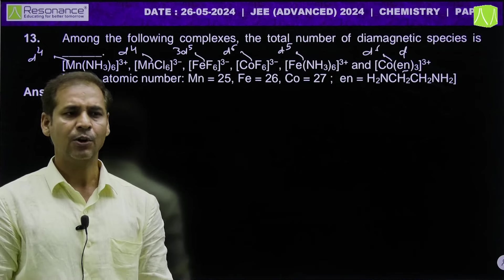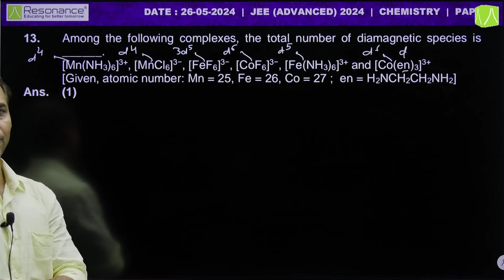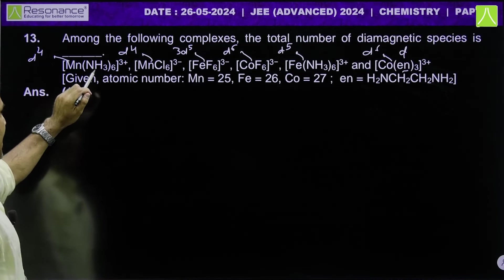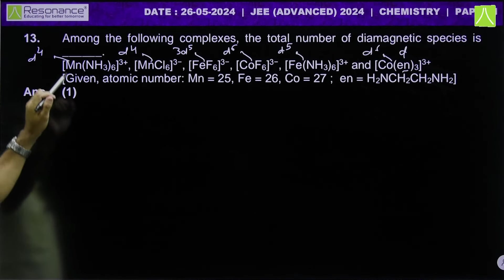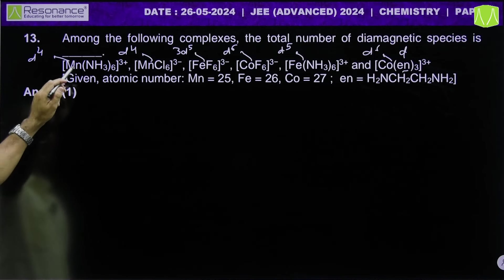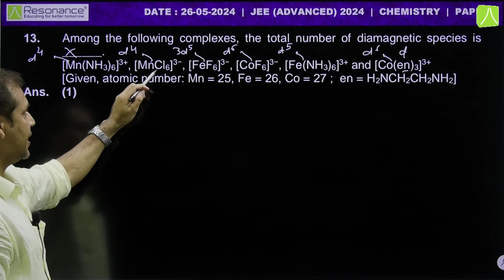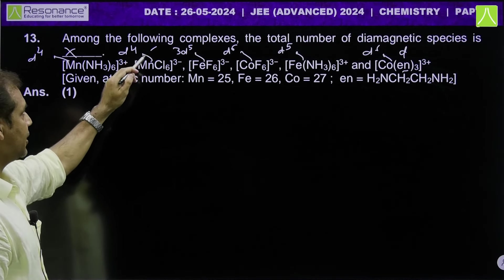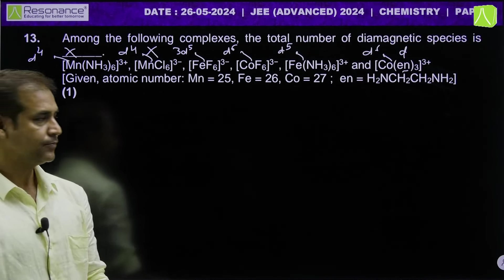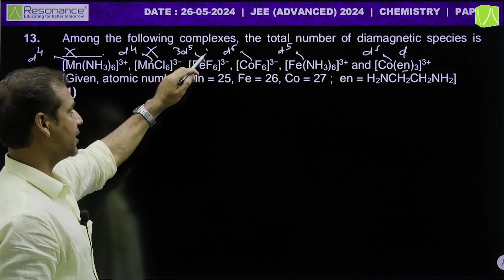Fe3+ is D5 — with F- (weak ligand), no pairing, 5 unpaired electrons, paramagnetic. Co3+ with F- is D6 with weak field — for cobalt(III), only two complexes don't pair: CoF6^3- and Co(H2O)3F3. Electronic configuration T2G^2,1,1, EG^1,1 gives 4 unpaired electrons — paramagnetic. Fe3+ with ammonia has D5; even with pairing, T2G^2,2,1 gives 1 unpaired electron — paramagnetic.